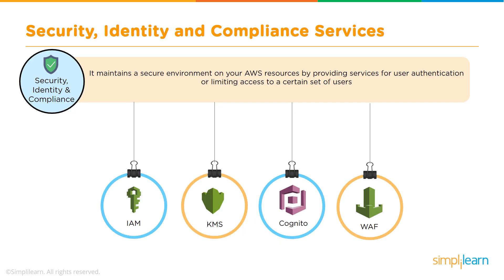Let's talk about the security, identity, and compliance services available in Amazon. These services help us maintain a secure environment by providing user authentication and limiting access to certain users on the AWS environment. IAM, or Identity and Access Management, is a product that enables us to manage access to AWS services and resources in a secure fashion. Using IAM, we can create and manage AWS users and groups and use permissions to allow or deny their access to AWS resources.